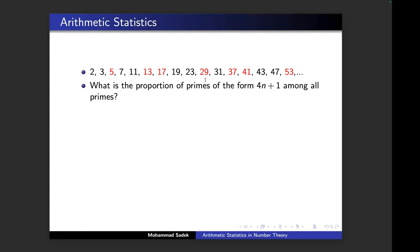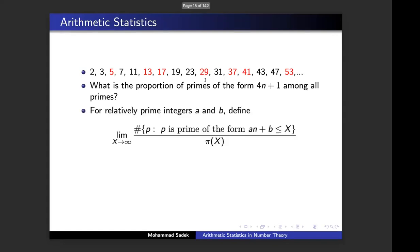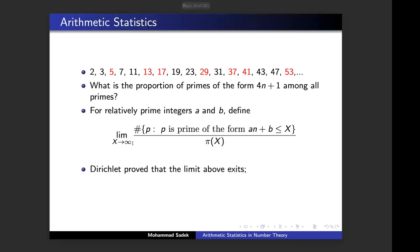The real question is: what is the proportion of primes that look like 4n+1 — the red ones — among all primes? Here comes arithmetic statistics, because we are trying to count and describe the frequency of occurrence. The approach was suggested by Dirichlet in his famous Dirichlet Theorem on Arithmetic Progressions. All you need to do is count all primes that look like 4n+1 up to a certain bound x, quotient by the total number of primes up to x, take the limit as x goes to infinity, and hope that limit exists. Dirichlet proved the limit exists and computed it explicitly as 1 over φ(a), where φ is the Euler totient function.